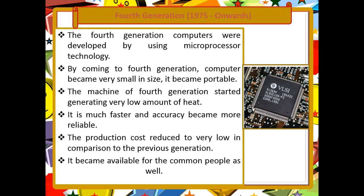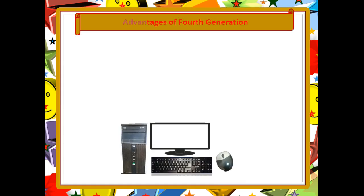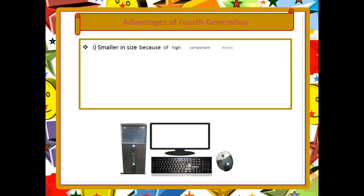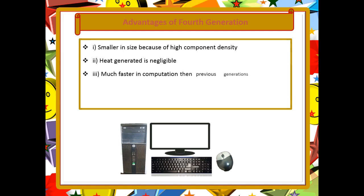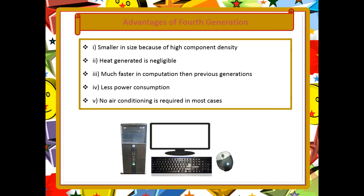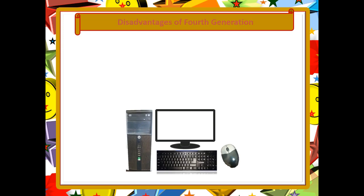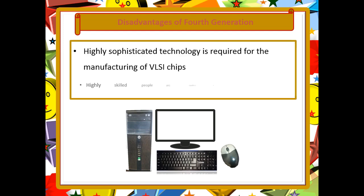The advantages of fourth generation computers are: smaller in size, negligible heat generation, much faster in computation than the previous generation, uses less electricity, and no air conditioning is required in most cases. The disadvantage is that highly sophisticated technology is used for manufacturing the VLSI chip, and highly skilled people are required in its manufacture.